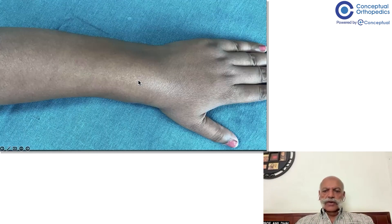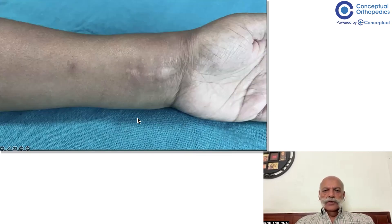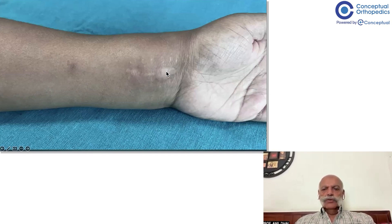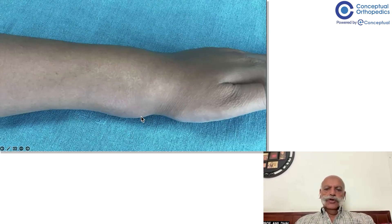This view is from the radial aspect, and you can see there is some swelling in the distal radial aspect of the wrist. There was also a scar mark, possibly from the previous operation which was performed on this patient.